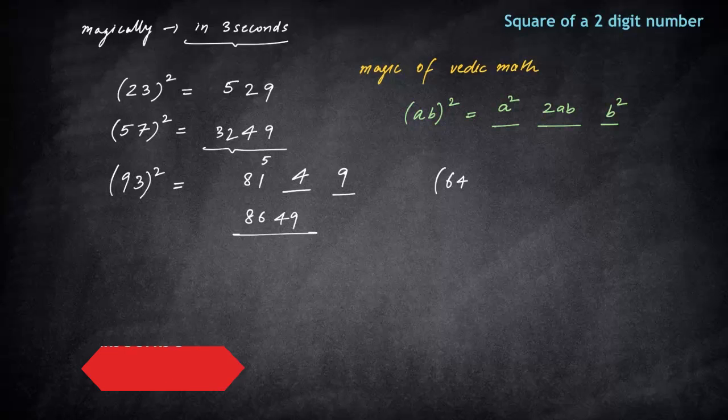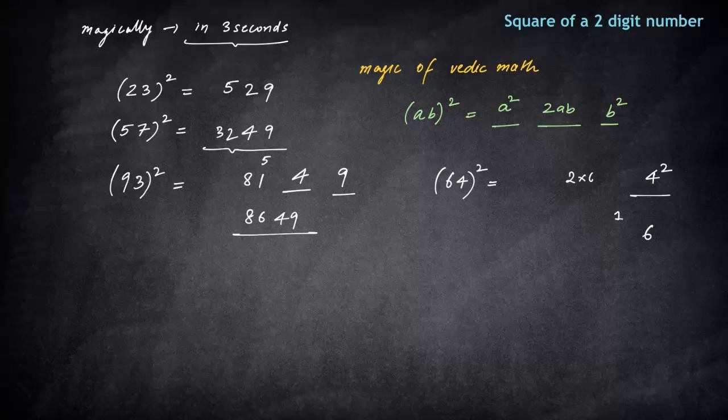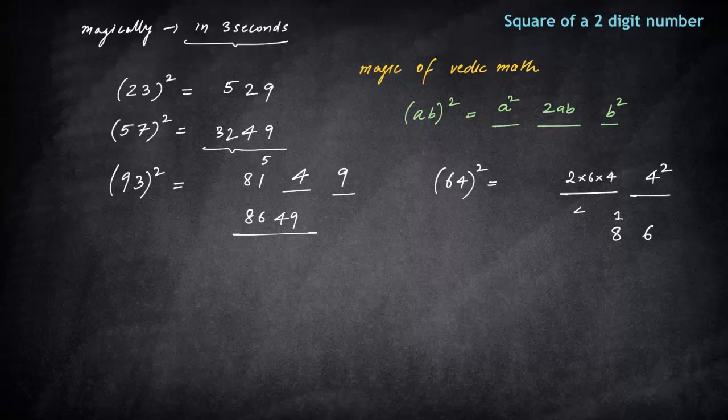Let's pick 64 square. We want to find the square of 64. So what you will do? First of all, 4 square for the first spot. That is 16. 1 will be the carry forward. Then what you will do? 2 into 6 into 4 as the third step. This is 24 into 2. This is 48. So you will just write 8. 4 will be carry forward.